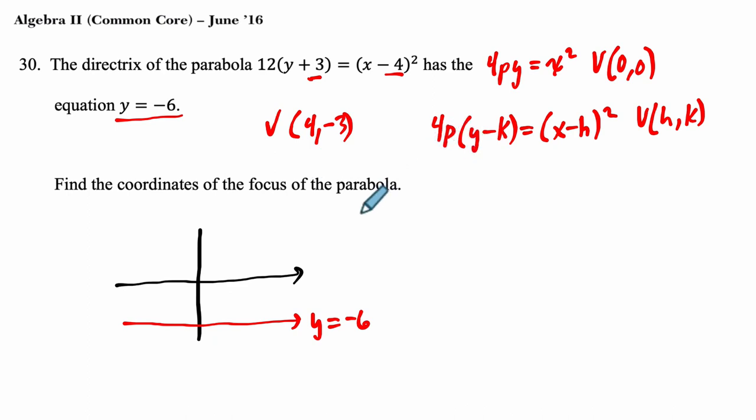And 4p. So first of all, let's plot that. 4, negative 3. Okay, 1, 2, 3, 2, 3, 4. And then negative 3 here, not the scale. So this is 4, negative 3. This is our vertex. V.